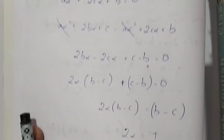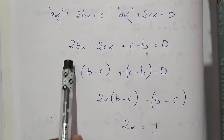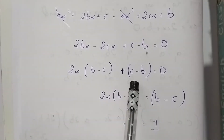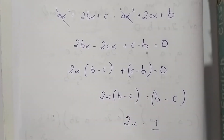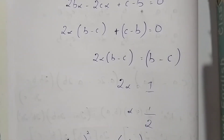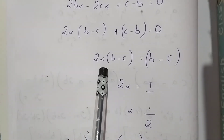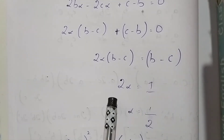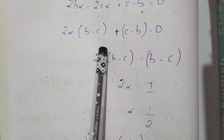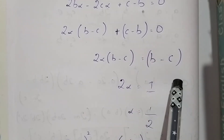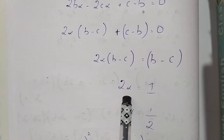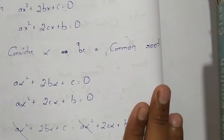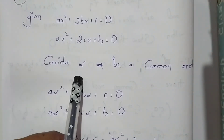From the first two terms we take 2α as common, giving 2α(b − c) + (c − b) = 0. We can factor this as 2α(b − c) = (b − c). Canceling (b − c) from both sides, we get 2α = 1, therefore α = 1/2. We have found the common root of these two equations is 1/2.